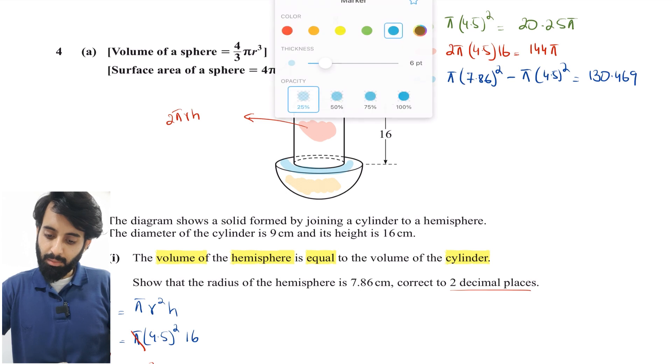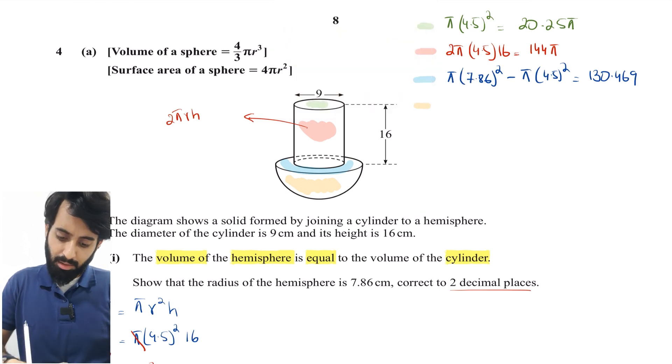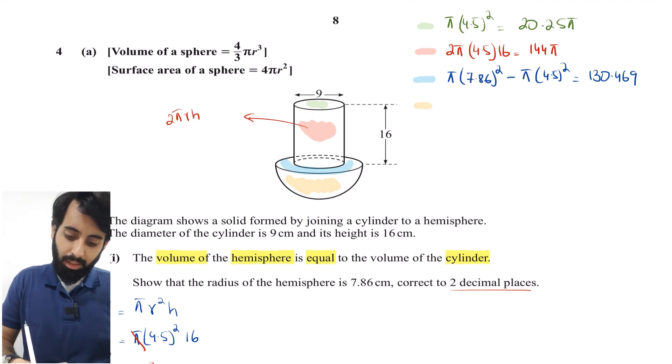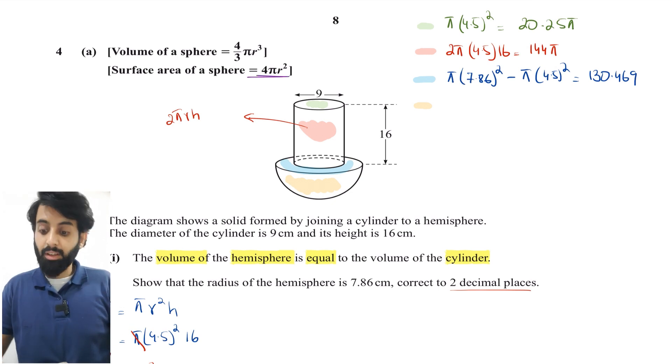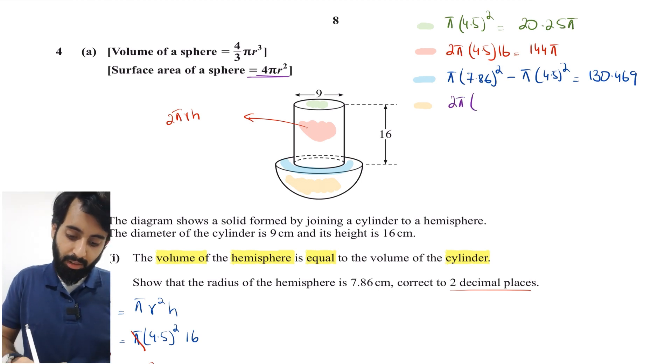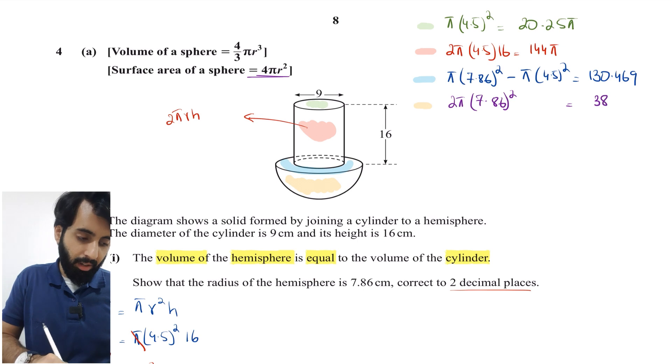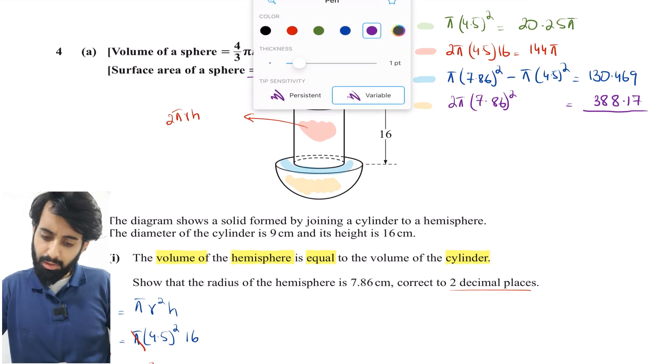Then we come to the final surface, which I've highlighted in orange. This is nothing but the curved surface area of the hemisphere. The surface area of a sphere is 4πr², so the curved surface area of a hemisphere is 2πr². The radius is 7.86. Let's work this out: 2π(7.86)² gives us 388.172.